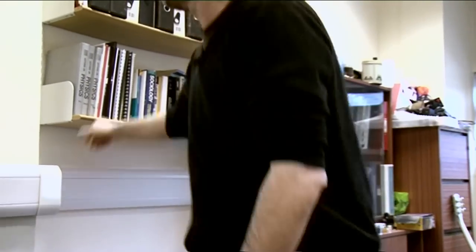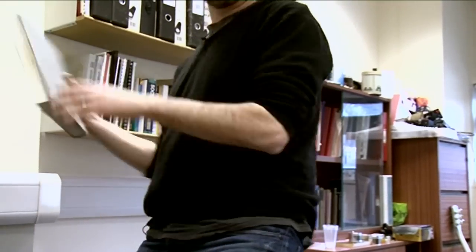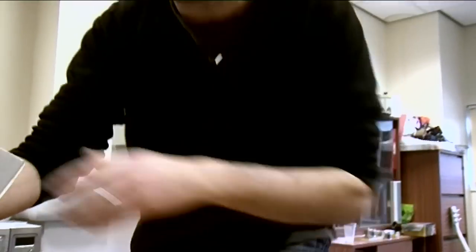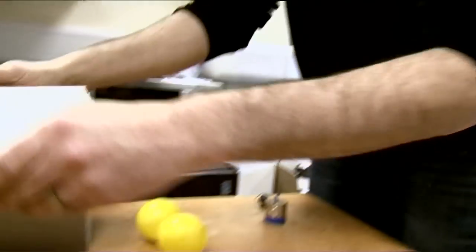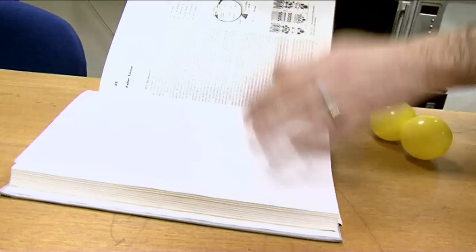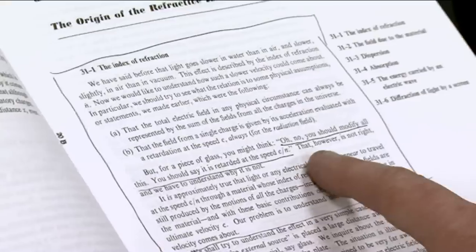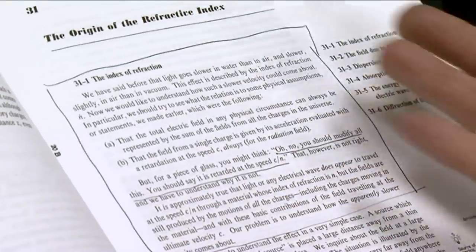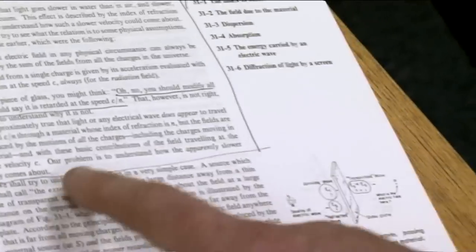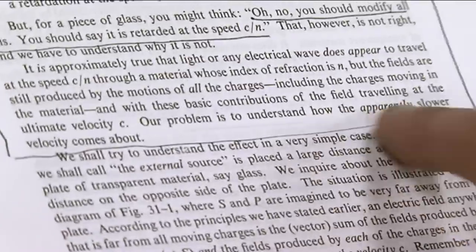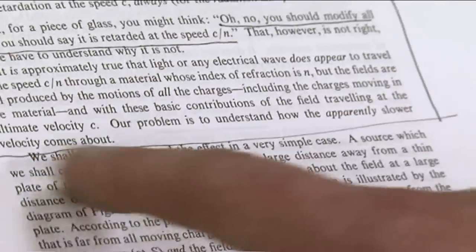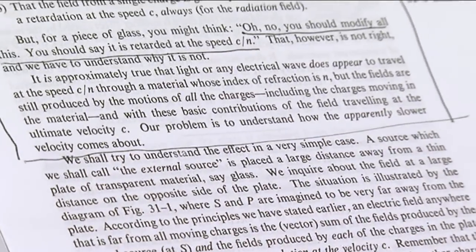Feynman does a great job — Feynman's Lectures in Physics — this is just a fantastic description of what's happening with refraction. If we turn to chapter 31, what he's basically talking about — notice how he says right at the end — our problem is to understand how the apparently slower velocity comes about.